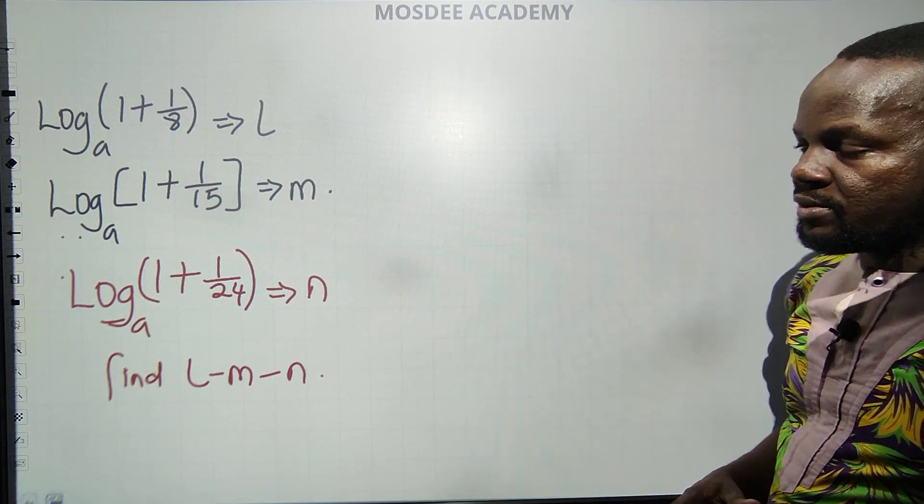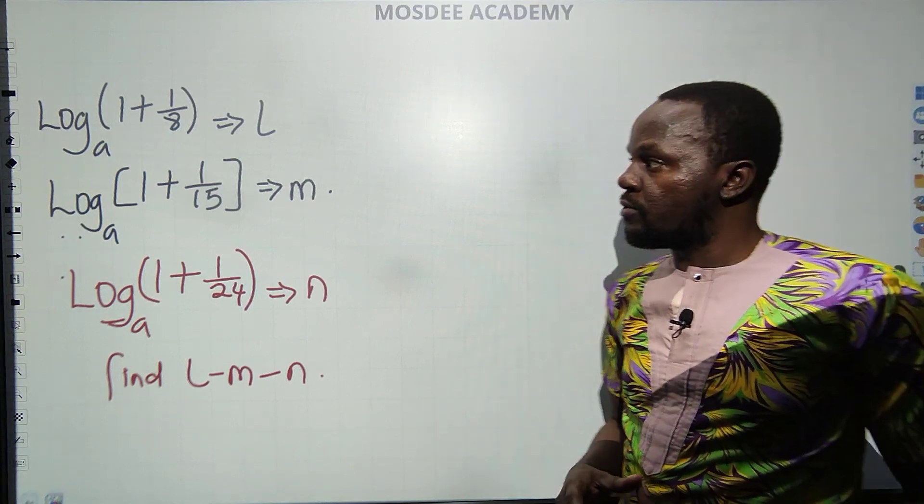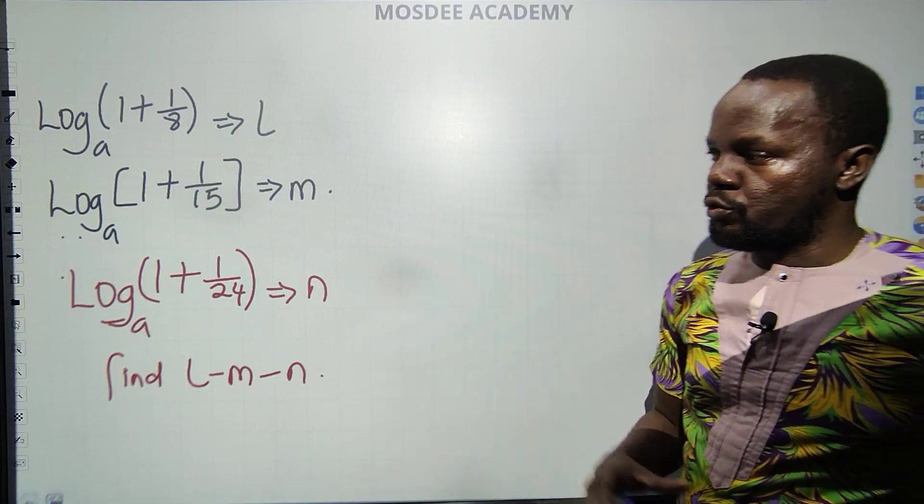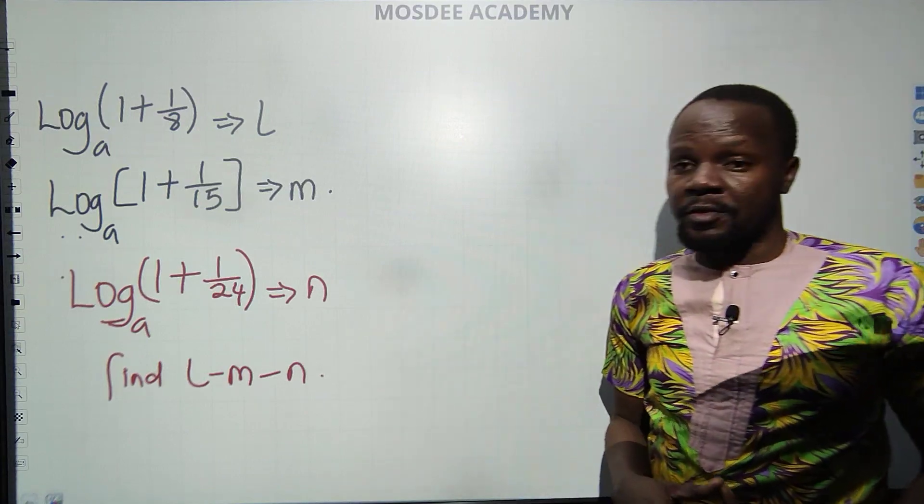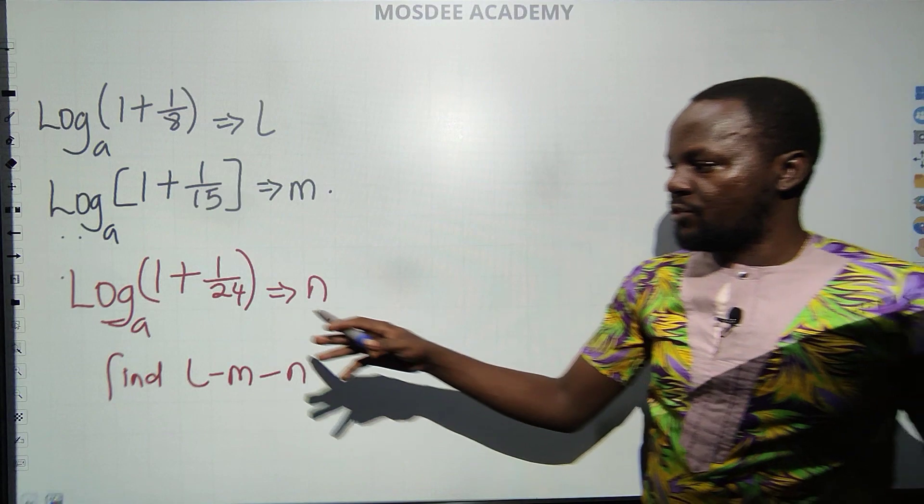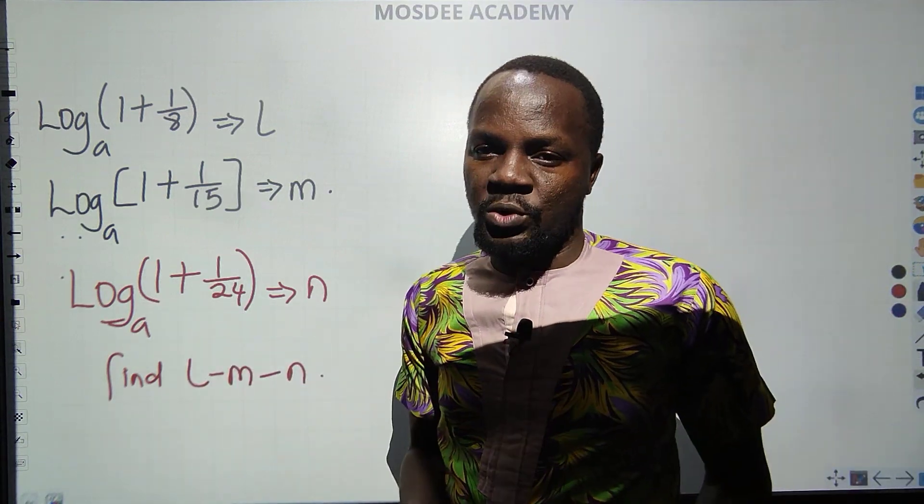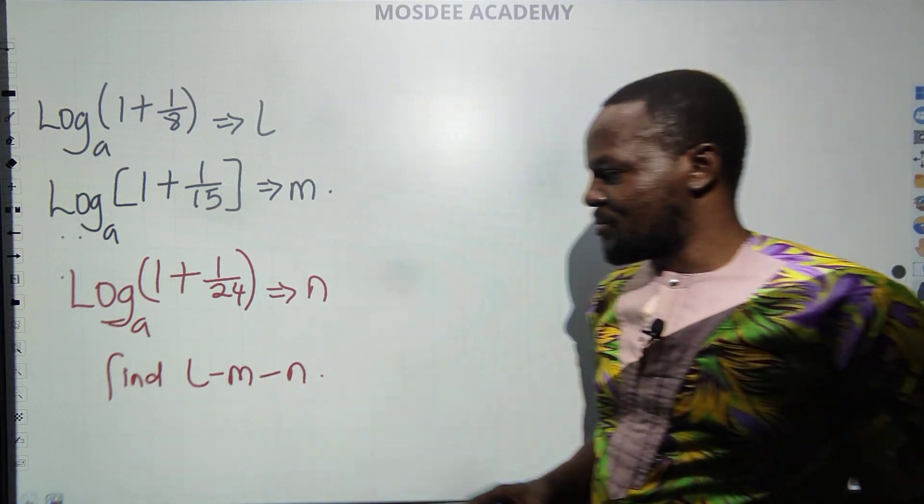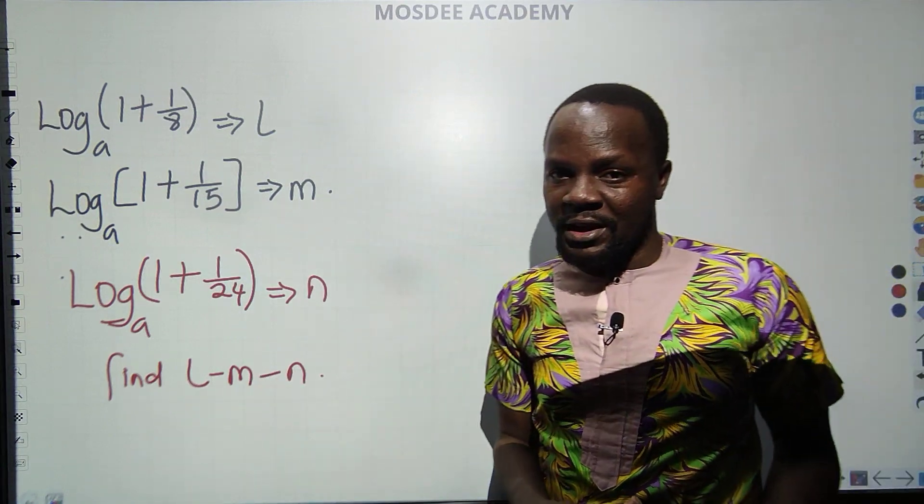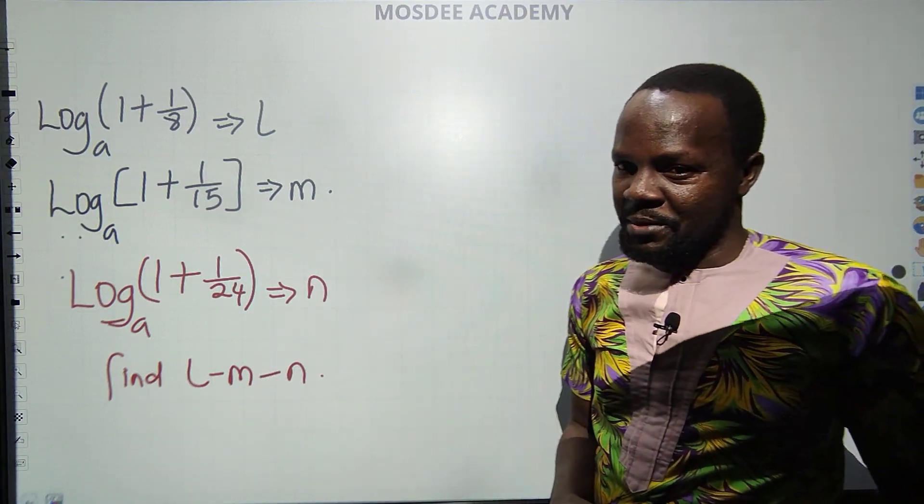The first one says log to base A, 1 plus 1 over 8, is L. Log to base A, 1 plus 1 over 15, is M. And the last one says log to base A, 1 plus 1 over 24, is equal to N. We have to find the value of L minus M minus N.